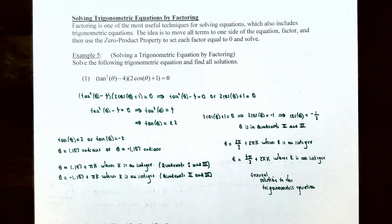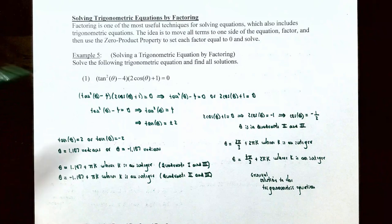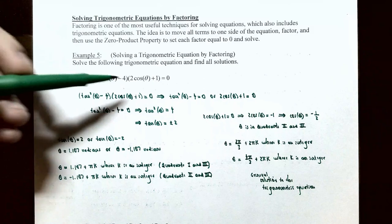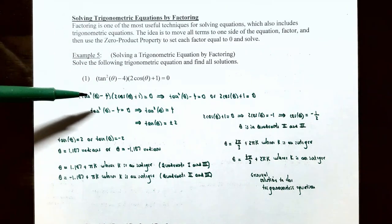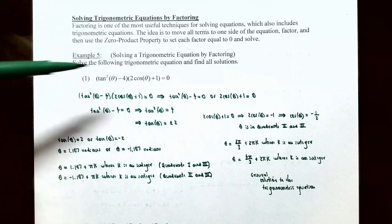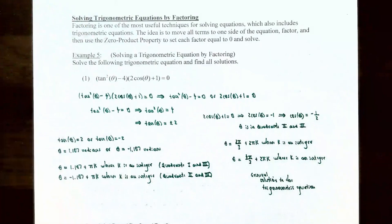In example five, solving a trigonometric equation by factoring: solve the following trigonometric equations and find all solutions. Number one: the equation is (tan²θ − 4)(2cosθ + 1) = 0. This trigonometric equation has already been factored for us — we have a product of two factors equal to zero. Using the zero product property, one of the factors must be zero. So tan²θ − 4 = 0 or 2cosθ + 1 = 0. At least one of the factors must be zero, so now we can solve the resulting equations.